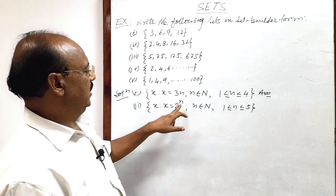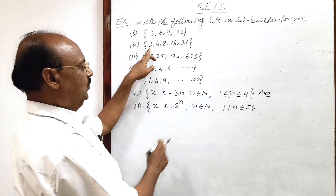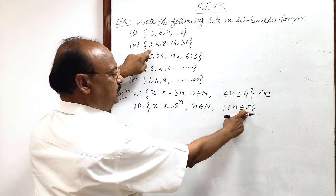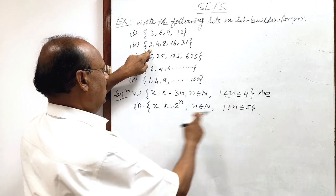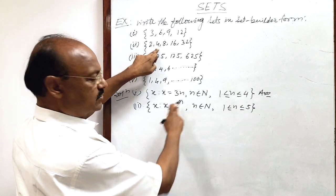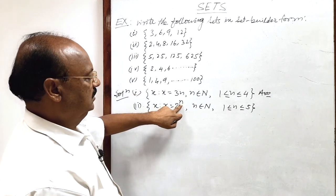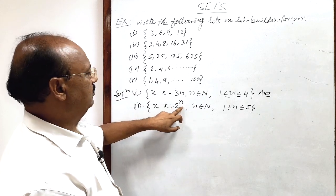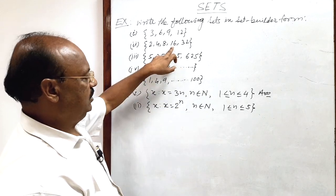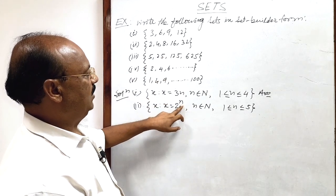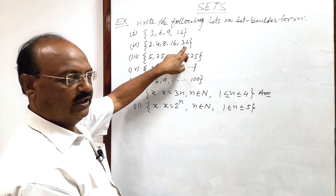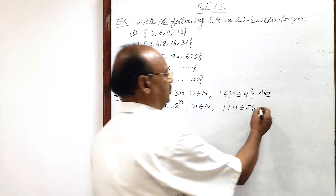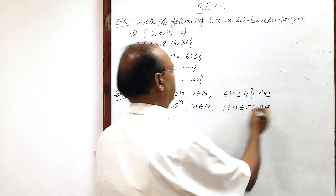We take n from 1 to 5, natural numbers 1 to 5. So if n is 1, then 2 to the power 1 is 2. If n is 2, then 2 squared is 4. If n is 3, then 2 cubed is 8. If n is 4, then 2 to the power 4 is 16. If n is 5, then 2 to the power 5 is 32. In this way, we can write this given set in set builder form. This is the answer for the second part.